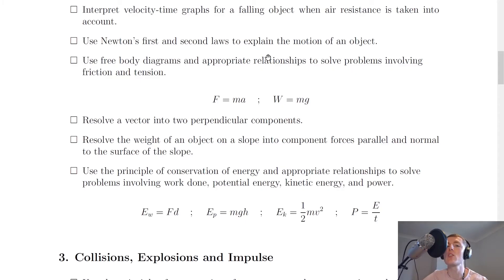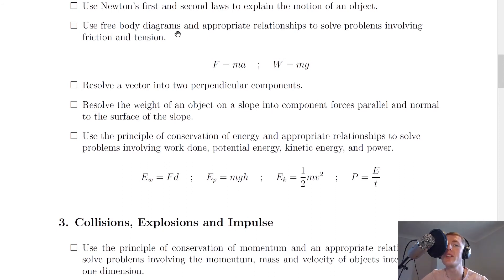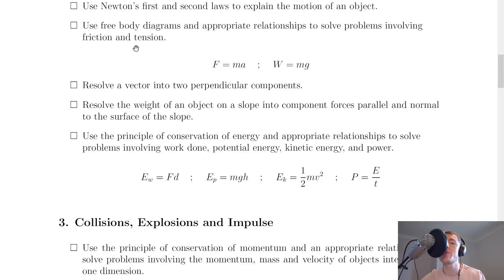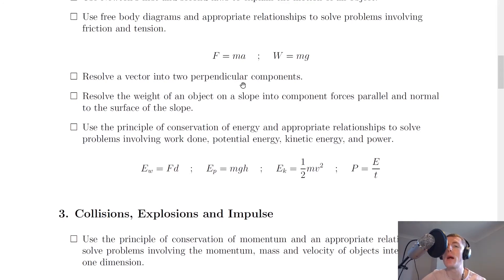Next, you need to use Newton's first and second laws to explain the motion of an object. Newton's first law states that an object will remain at rest or move at constant speed in a straight line unless acted on by an unbalanced force. Newton's second law states that an unbalanced force causes an object to accelerate in the direction of that force, with the equation F equals ma. You also need to use free body diagrams and appropriate relationships to solve problems involving friction and tension, using F equals ma or T equals ma, and W equals mg for hanging objects — mostly referring to connected systems.